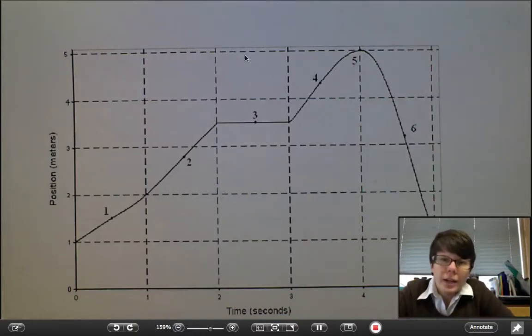Question 11. Rank the instantaneous speeds for each numbered section of this graph from greatest to smallest.